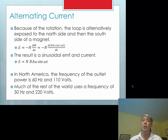Because of that rotation, the loop is alternatively exposed to the north side and then the south side of a magnet, et cetera, very often. And so my EMF, remember Faraday's law is EMF is equal to minus N where N is the number of loops. And so there are a lot of loops in these generators. Times the derivative or delta flux over delta T. Just to remind yourselves, flux is nothing more than the magnetic field strength times the area times the cosine of the angle.